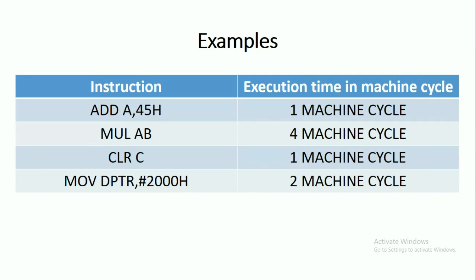And finally we have MOV DPTR,#2000H. So this 2000 is a data that will be moved into DPTR. For this one we require two machine cycles.